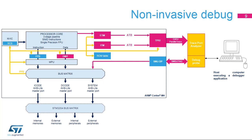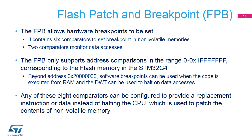Note that trace packets are timestamped in the ITM and ETM modules. The flash patch and breakpoint unit allows hardware breakpoints to be set. It contains six comparators to set breakpoints in non-volatile memories. They monitor the instruction fetch address and return a breakpoint instruction when a match is detected. When the breakpoint instruction is executed, the processor halts in debug mode. Two comparators monitor data accesses used to halt the processor when particular constants present in non-volatile memory are accessed. The FPB only supports address comparisons in the range 0 to 0x1FFFFFFFF, corresponding to the flash memory in the STM32G4. Beyond address 0x20000000, software breakpoints can be used when code is executed from RAM, and the DWT can be used to halt on data accesses.